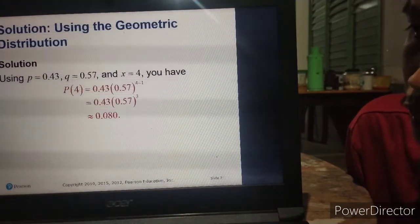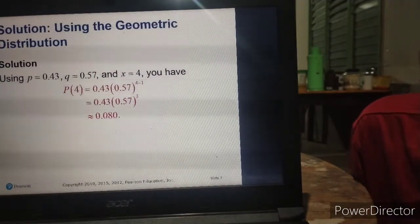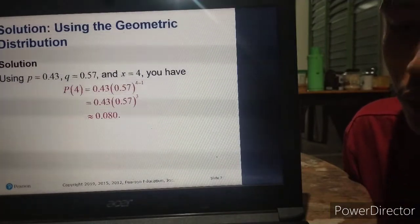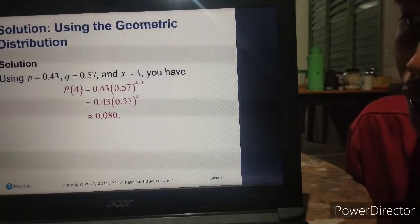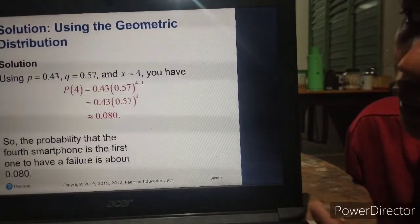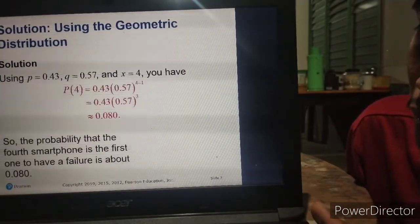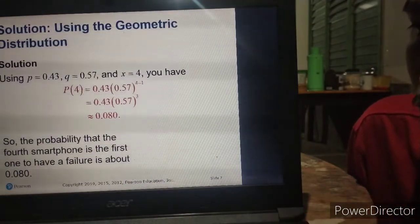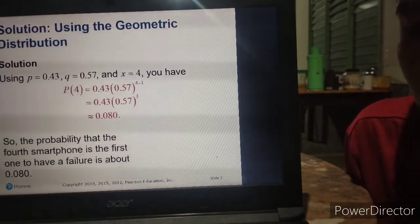It is equals to 0.43 times 0.57 cubed, so it is approximately 0.080 or 0.08. So the probability that the fourth smartphone is the first one to have a failure is about 0.08.